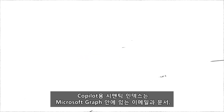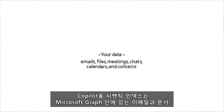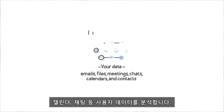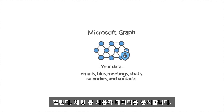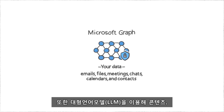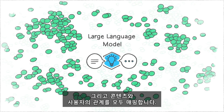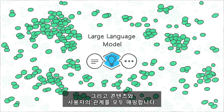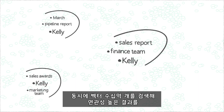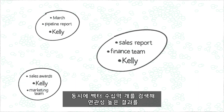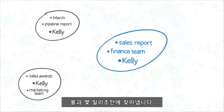Semantic Index for Copilot analyzes your data — that's all your emails, documents, calendar, chats, and more in the Microsoft Graph — and uses a large language model, or LLM, to map all your content and the relationships between your content and you, searching through billions of vectors to find the most relevant results in milliseconds.